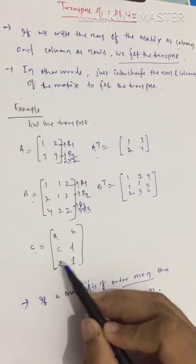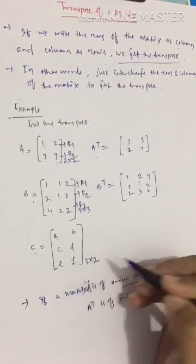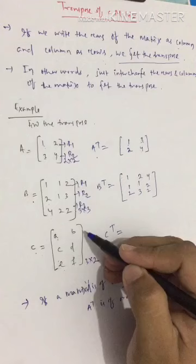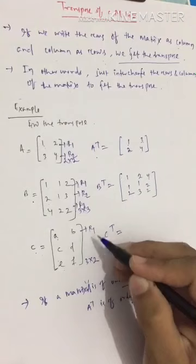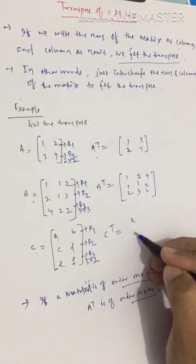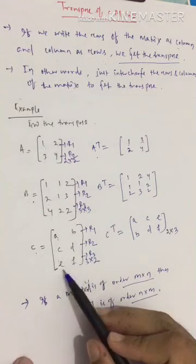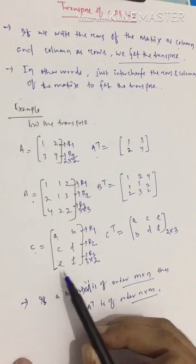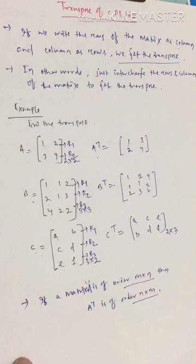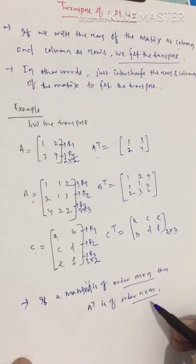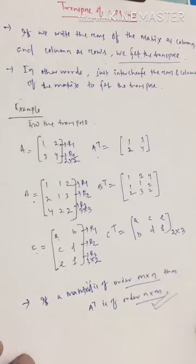The final example: C = [a, b; c, d; e, f], which is a 3×2 matrix. Taking its transpose, write rows as columns — R1 as C1, R2 as C2, R3 as C3 — you get C-transpose = [a, c, e; b, d, f], which is a 2×3 matrix. So a 3×2 matrix has a transpose of order 2×3. If a matrix A is of order m×n, then A-transpose is of order n×m. Now let's move into the properties of transpose.